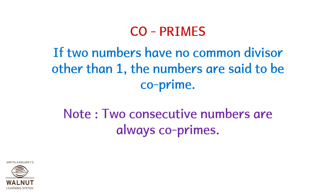Let's revise the definitions. If two numbers have no common divisor other than 1, they are coprimes. If the difference between a pair of prime numbers is 2, they are twin primes.